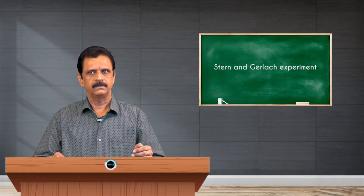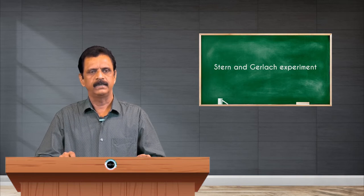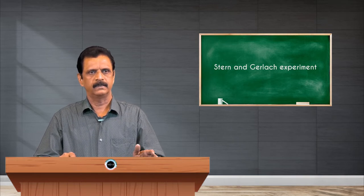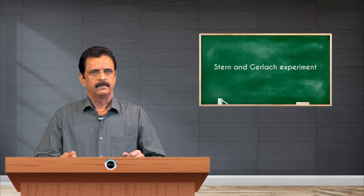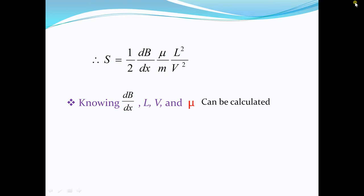We have discussed the principle and theory of this experiment. Today, we will discuss the experimental procedure, results, and inference. On the basis of the theory, the displacement of the atomic magnets is given by: S = (1/2)(dB/dx)(μ/M)(L²/V²), with usual notations. Knowing the values of dB/dx (the magnetic field gradient), L (distance of travel of atomic magnets in the field), and V (velocity of atomic magnets), the magnetic moment μ can be calculated.